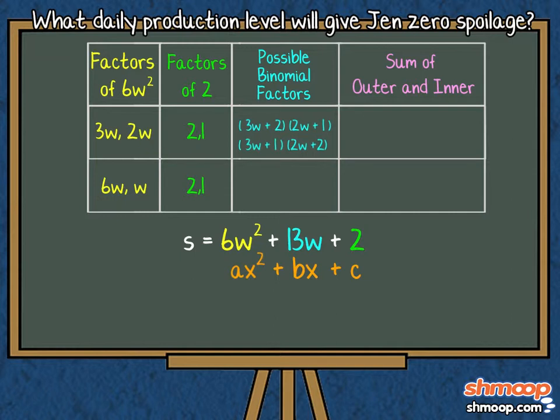For the second row, we get 6W plus 2 times W plus 1, and 6W plus 1 times W plus 2. Again, note the parentheses.